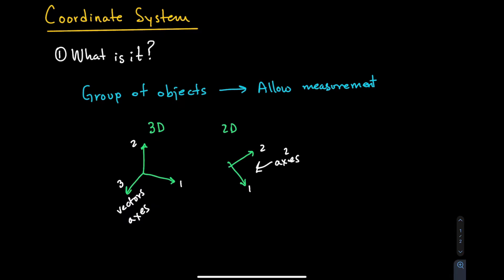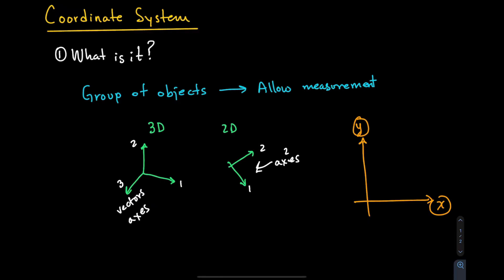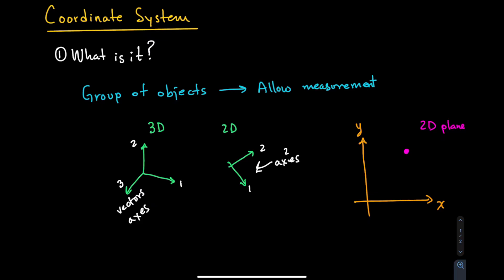What do we mean by these objects allowing a measurement? A common example has a coordinate system with two axes — one called x and the other called y. If we want to locate an object in this 2D plane, we need to quantify the location of this object along x and along y.